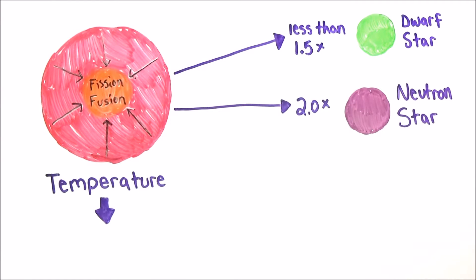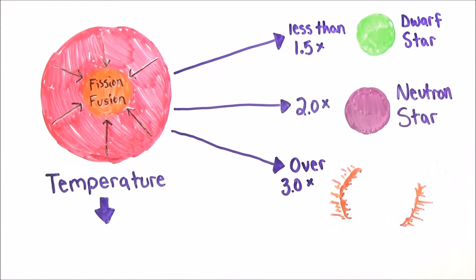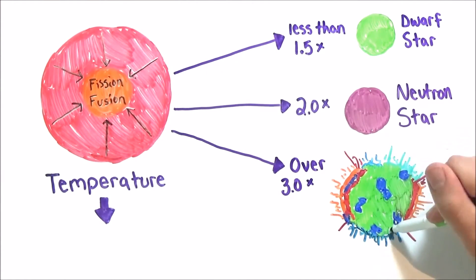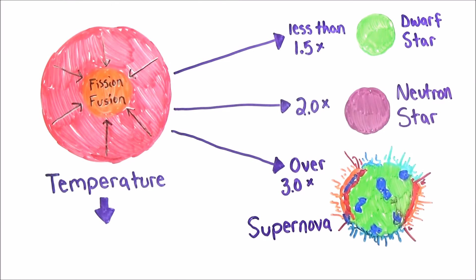However, once a star starts to cave in on itself that is over 3 times the size of the sun, the star decides to shoot out a bunch of its mass to have less gravity and become one of the two top stars. This shooting out is called a supernova.